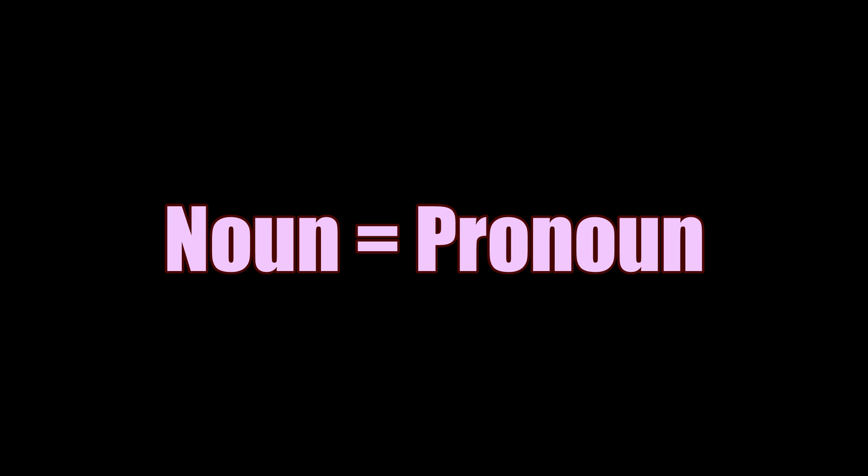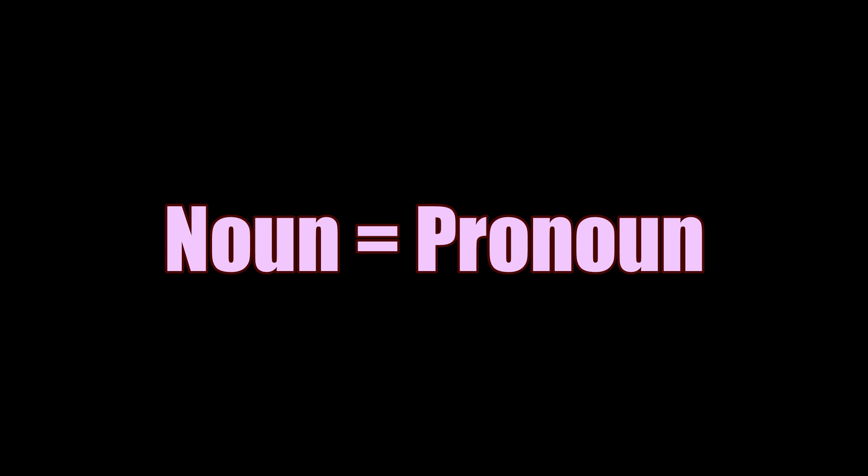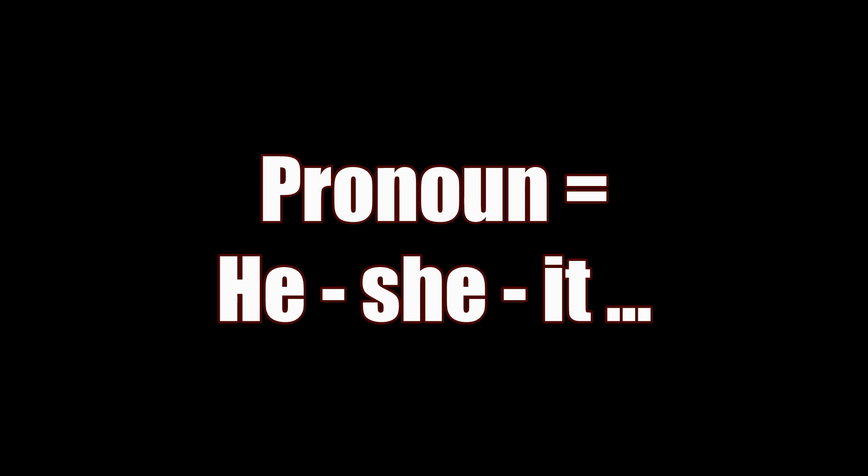During our conversation, when we talk about any noun, whether animate or inanimate, without mentioning its name, it is called a pronoun. For example, in place of Ali, we say 'he'. In place of any bird, animal, or any city, we say 'it'. So he, she, it, and they are all examples of pronouns.